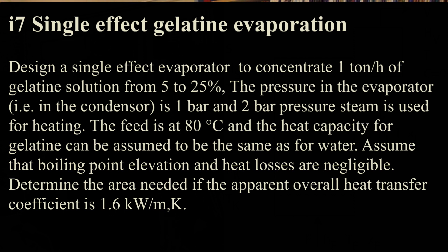The feed is at 80 degrees Celsius and the heat capacity for gelatine can be assumed to be the same as for water. Assume that boiling point elevation and heat losses are negligible and determine the area needed if the apparent overall heat transfer coefficient is 1.6 kW per meter Kelvin.